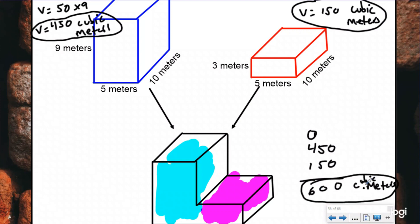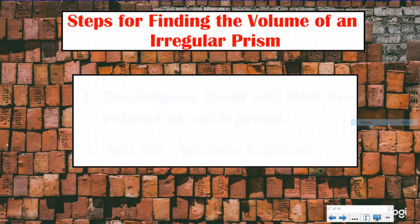So volume is additive. If you take two prisms and put them together, you can just add the volume of both prisms and it will tell you the total volume of your new prism. Now the only difference between today and yesterday is our irregular prisms are not going to be made out of cubes — you're going to have to use the dimensions that they give you. But other than that, it's the same exact process and the same exact steps.